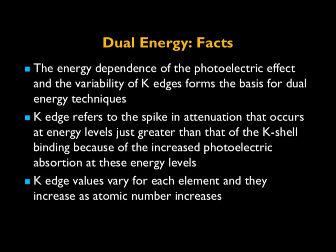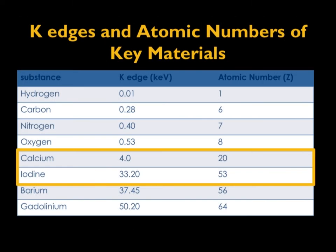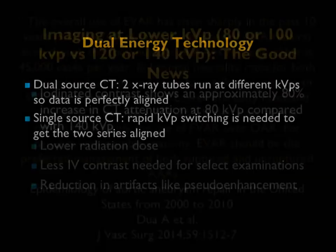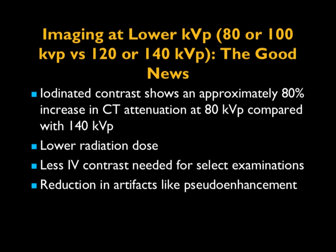In terms of bone removal, if you have dual energy acquisition available, it's very easy to separate bone from vessel. There's less artifact and less problem, particularly when there's lots of calcification present. The difference in K-edge between calcium and iodine — 4 versus 33 — allows us to separate the two. Whether you're using a Siemens dual source or a GE single source, it doesn't matter in that regard. With dual energy, it's the same or lower dose and often less IV contrast can be used, reducing artifact and potentially reducing processing time.